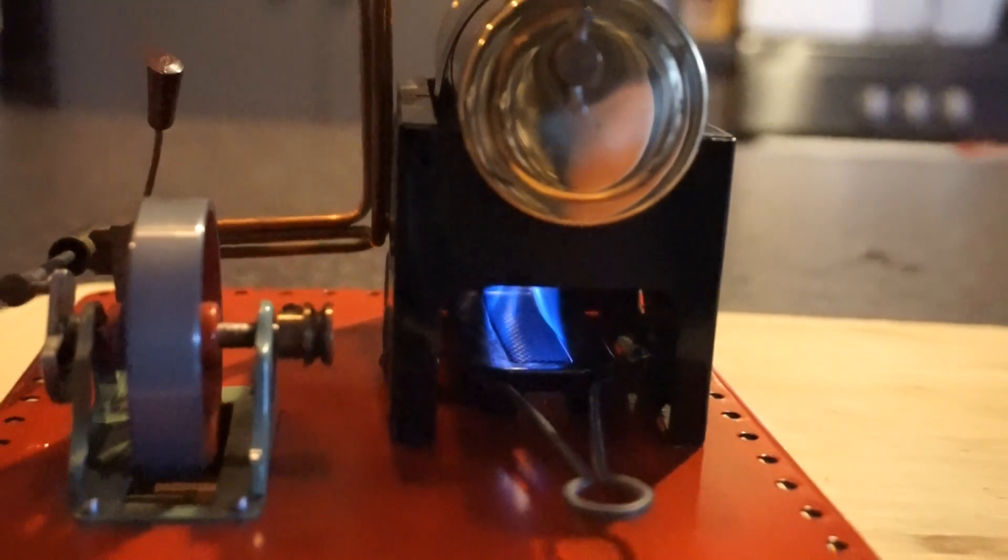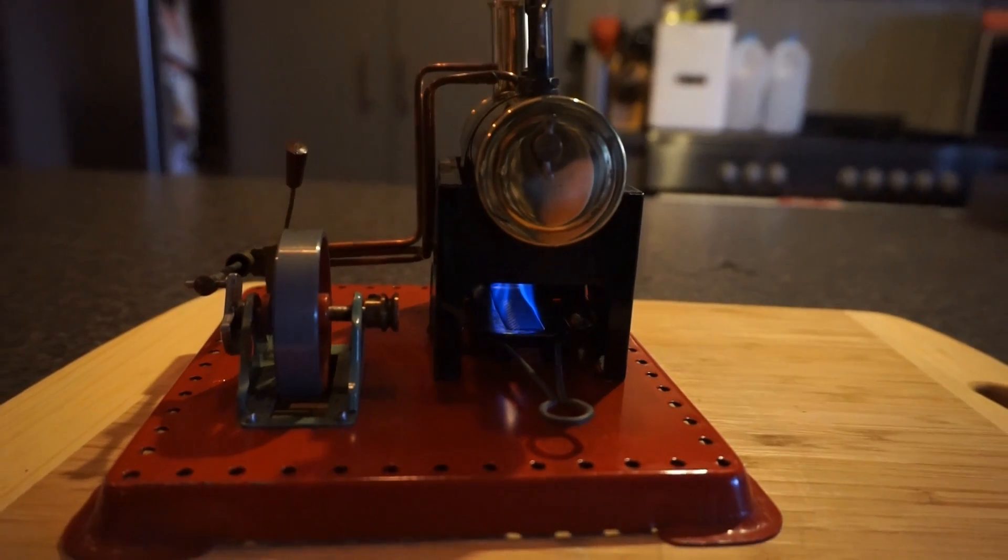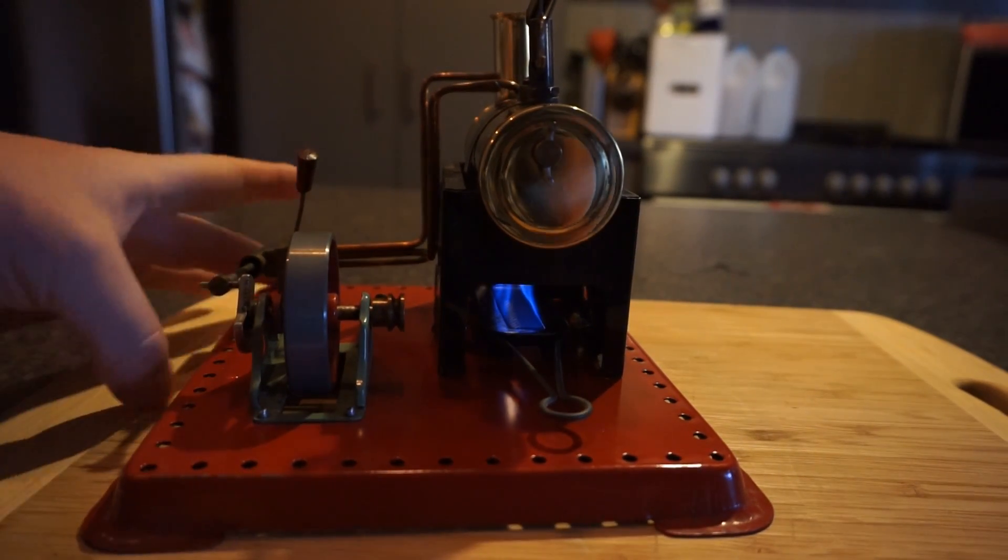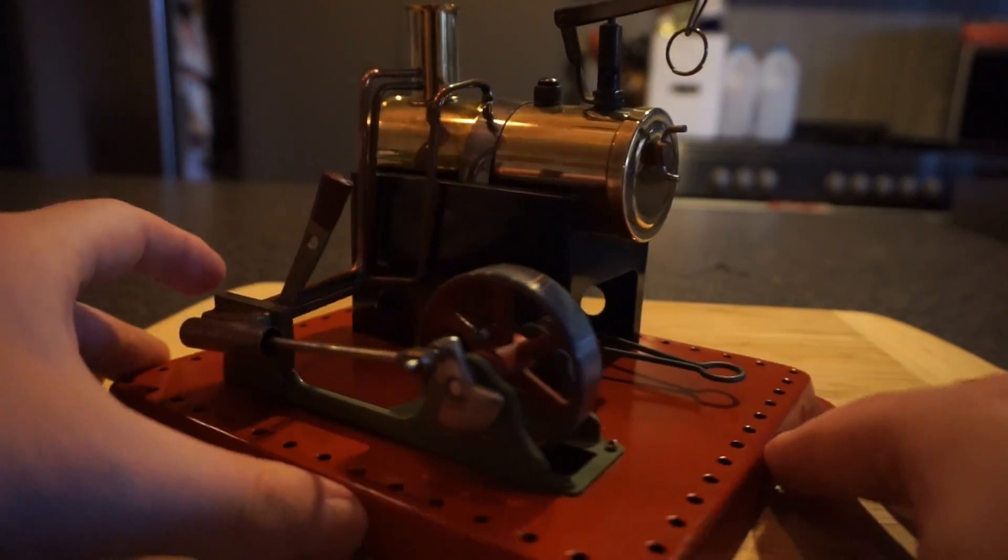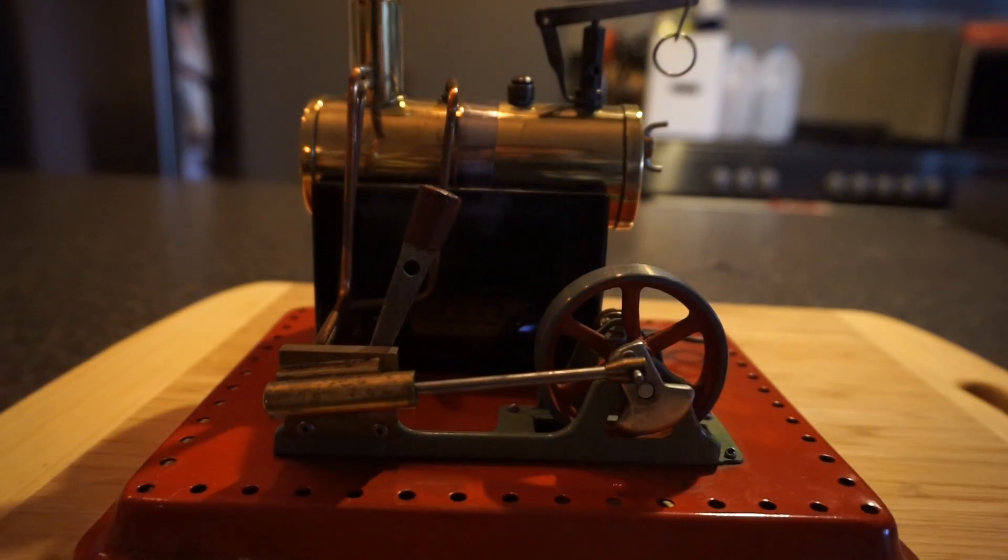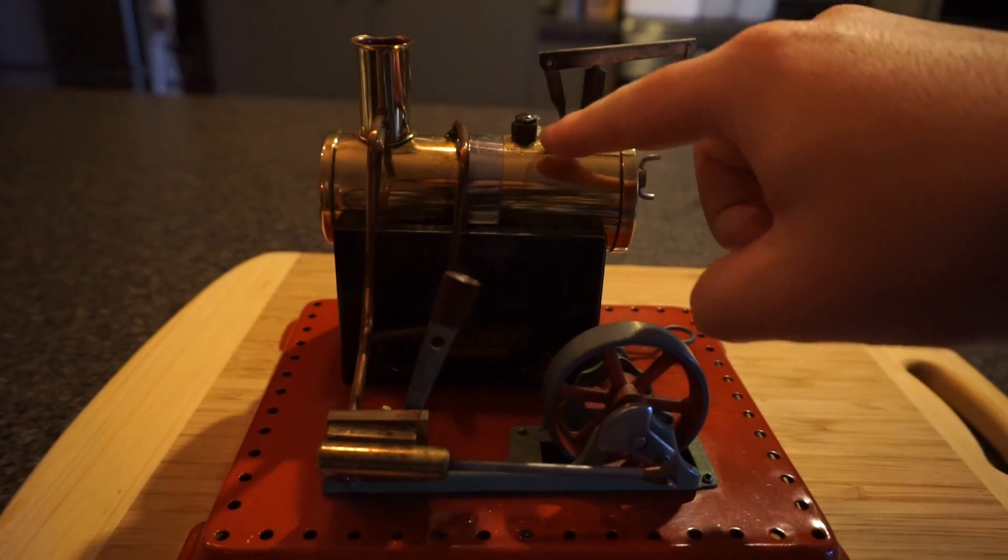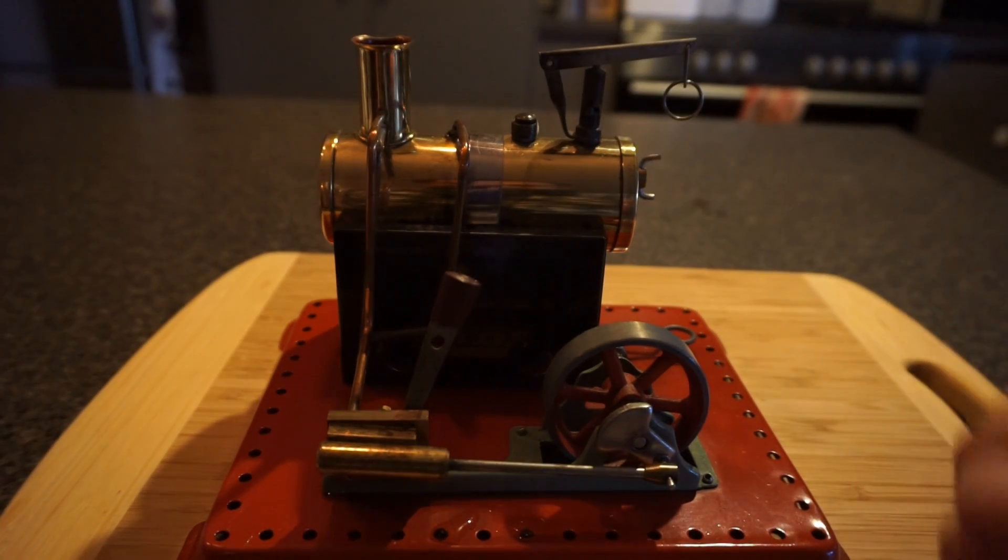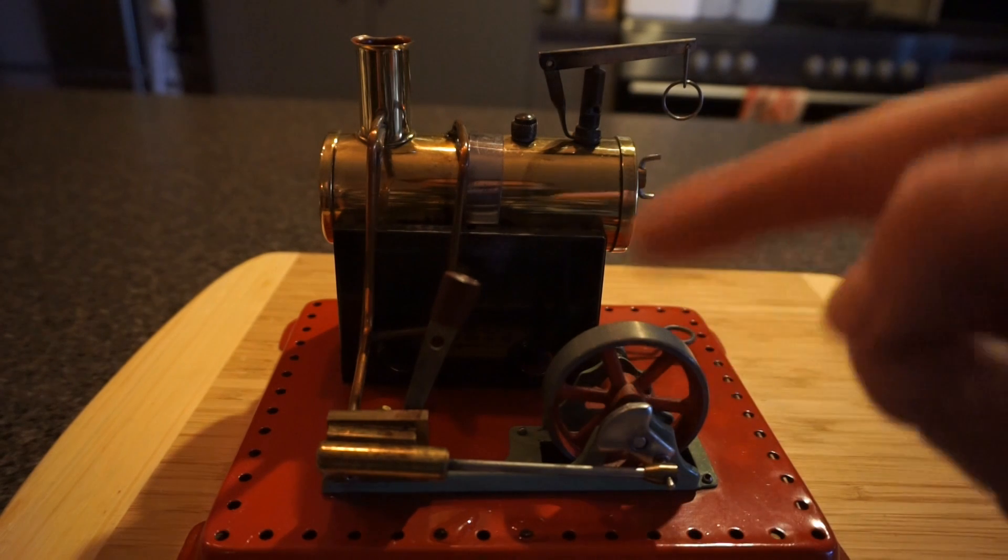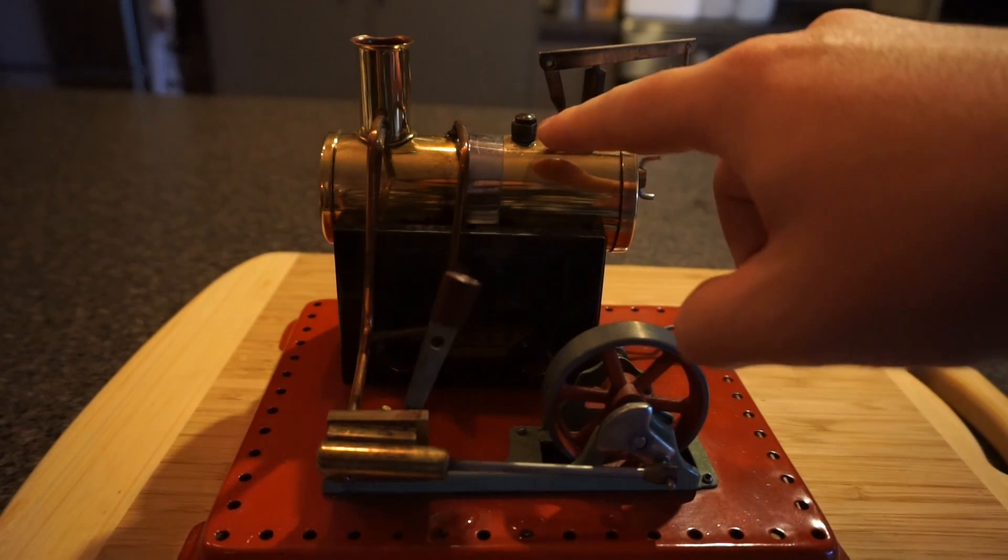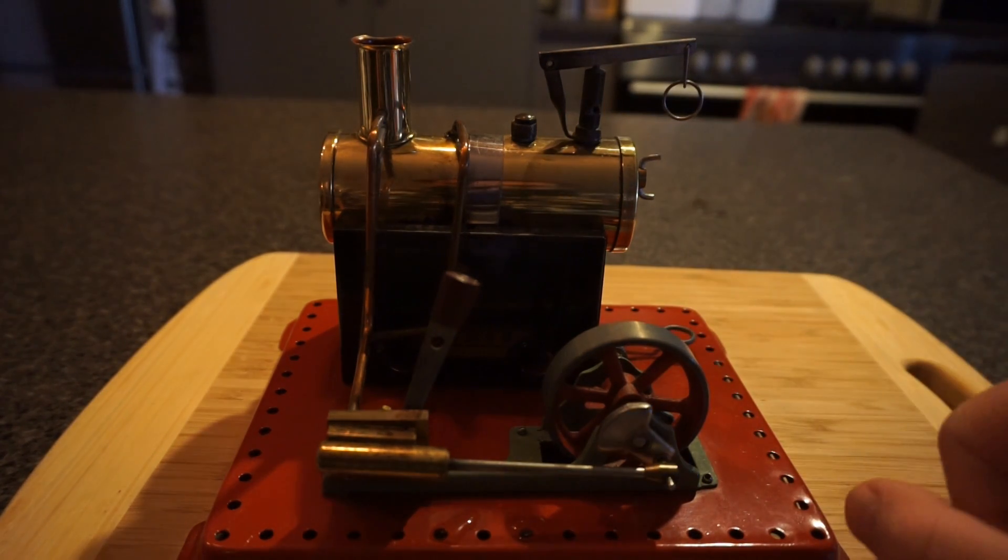So you can sort of hear that some of the steam is being produced now and we're nearly ready to get it going. One way we can tell that it's ready is that this little safety valve here releases excess steam when there's enough produced in this boiler to run the machine and there's a fair bit of steam coming out of there so I think we're ready to give it a go.